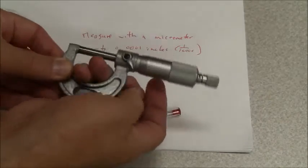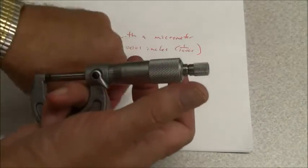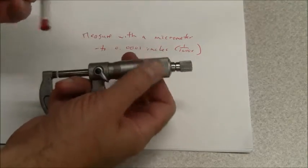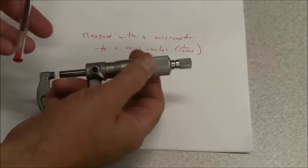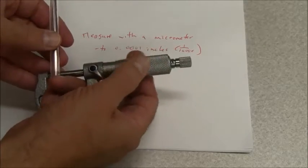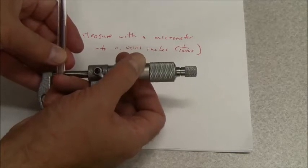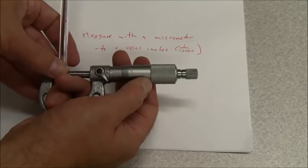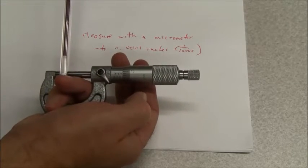Now grip the micrometer in such a way you can open it with one hand. We hold the piece you want to measure in the other hand. This may take a moment for me to get it open. Make sure the piece is set the way you need it. Snug it up and now you can begin reading.